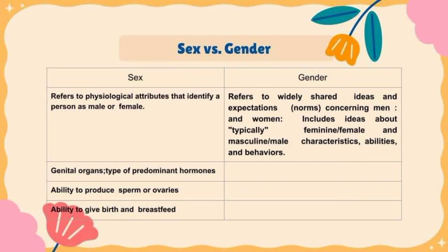Next, let's differentiate the differences between sex and gender. Sex refers to biological attributes that identify a person as male or female, including genital organs, type of predominant hormones, ability to produce sperm or ovaries, and ability to give birth and breastfeed.